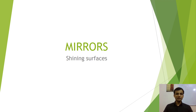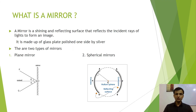Hello everyone, now we will study about mirrors. In our daily life, every day we come in front of mirrors to see our face at least twice or thrice. So what is a mirror? We can define a mirror as a shining, reflecting surface that reflects the incident rays of light to form an image. It is made up of glass polished from one side by silver. We have seen two types of mirrors: one plane mirror and another spherical mirror.